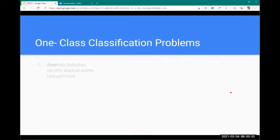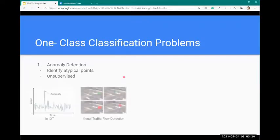One-class classification problems include anomaly detection, which is widely studied. The goal is to identify outliers - points which do not belong to the typical data distribution. Finding anomalies has applications ranging from IoT to illegal traffic flow detection.